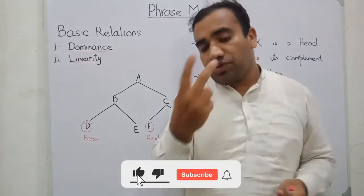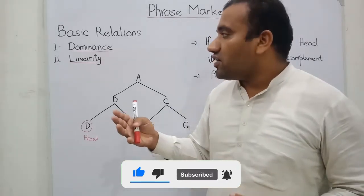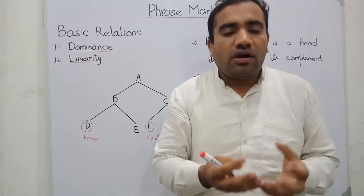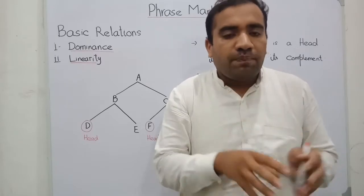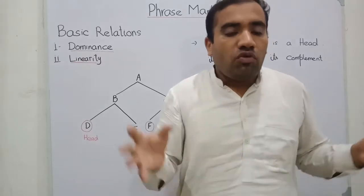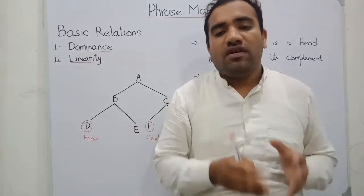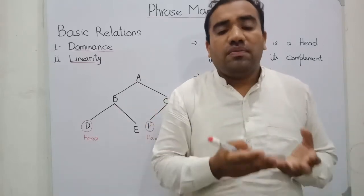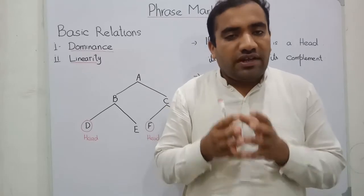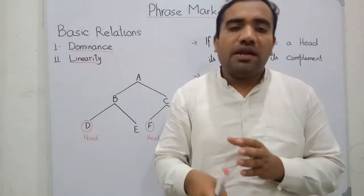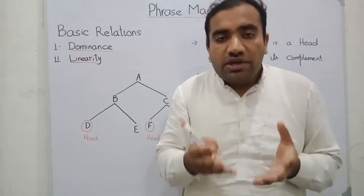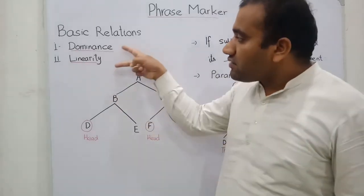There are two basic relations in syntax. The first is dominance — dominance means one part or one item that is superior and controls the items below it. The second is linearity, meaning what is the linear order of the sentence — whether the complement appears at the final position or at the initial position. These are the two basic things.